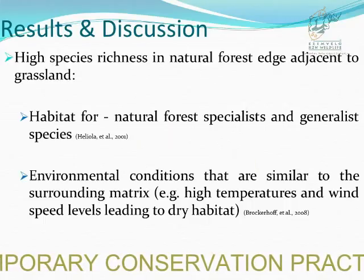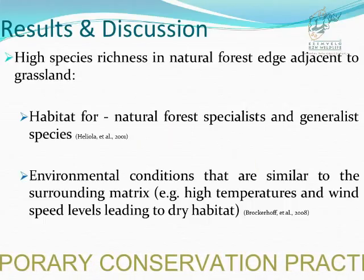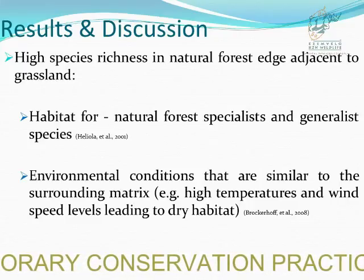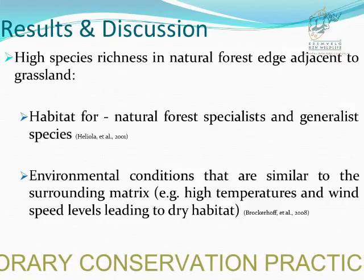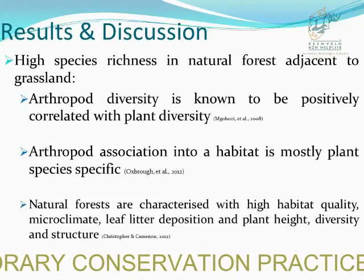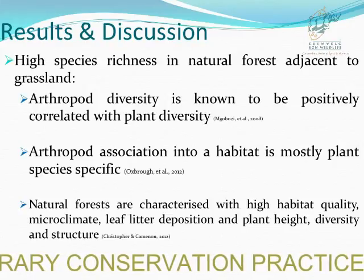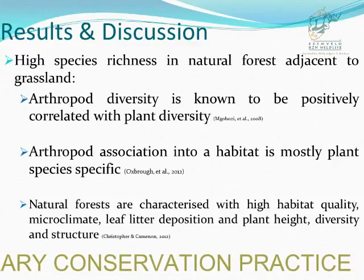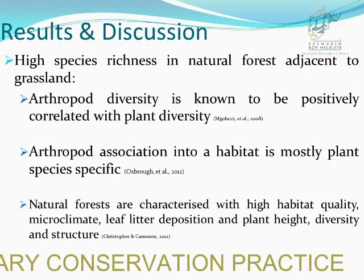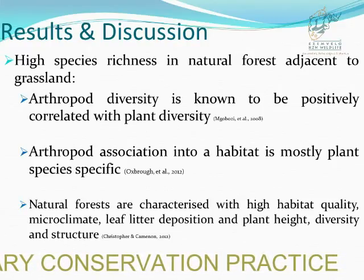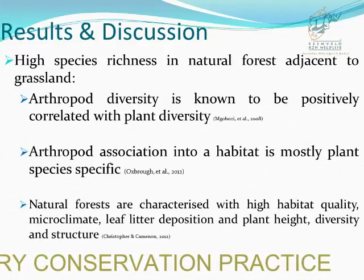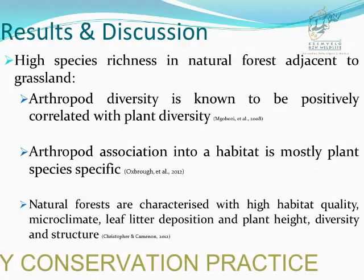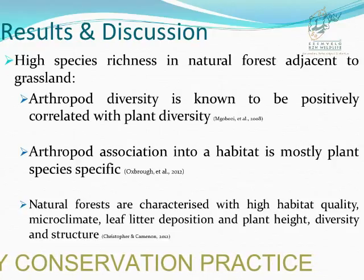We think high species richness in natural forest edges is because we found both natural forest specialists and generalist species there, since edge habitats tend to have environmental conditions similar to the matrix. High species richness in natural forest interior adjacent to grassland may reflect the positive correlation between plant diversity and arthropod diversity, and the fact that arthropod association with habitat is mostly plant species-specific. Natural forests are characterized by high plant quality, microclimate, leaf litter deposition, plant height, plant diversity, and plant structure. We also found high levels of leaf litter deposition in natural forests, and deep leaf litter is known to offer increased resources for arthropods.